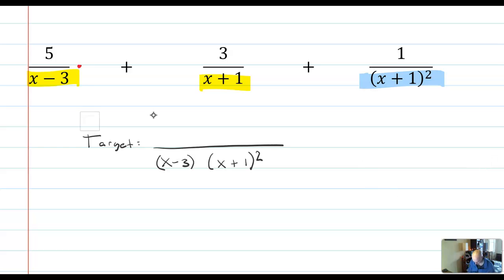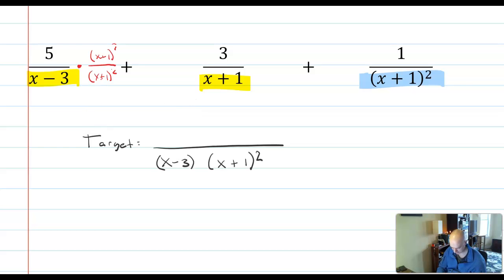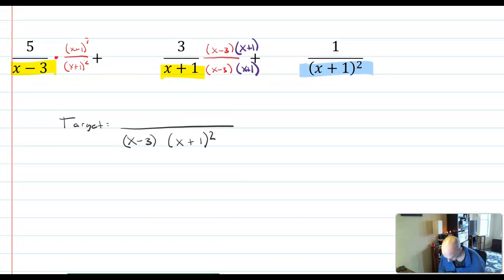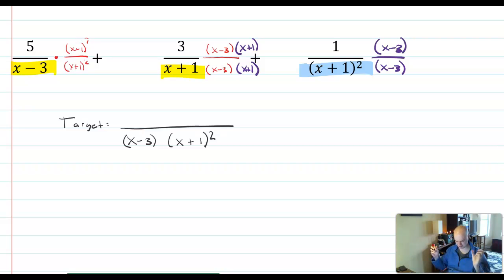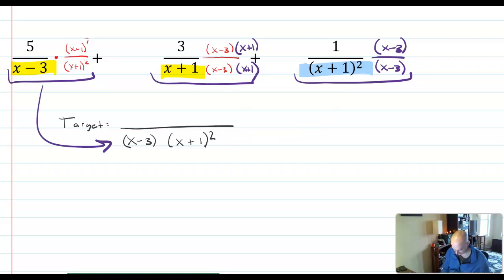So, for example, 5 over x minus 3, I need to multiply by x plus 1 squared over x plus 1 squared. Meanwhile, this term right here, 3 over x plus 1, it needs an x minus 3 and an x minus 3. But it also needs an x plus 1 and an x plus 1 to kind of complete the set and get that x plus 1 squared going on. And finally, 1 over x plus 1 quantity squared. What is that going to need? That's going to need an x minus 3 and an x minus 3. And then we can really just kind of... Denominators are all going to now be the same, right? These are all the same. That was our goal. So those are all going to become the denominator. But we have to do a little bit of work to figure out what goes up in the numerator.